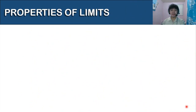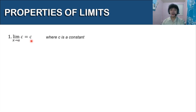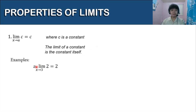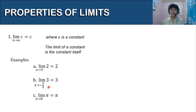For this video we're going to be discussing the properties of limits. Let's have the first one: the limit of c as x approaches a is equal to c, where c is a constant. We should remember that the limit of a constant is the constant itself. For example, the limit of 2 as x approaches 3 is equal to 2, the limit of 3 as x approaches negative one-half is equal to 3, and the limit of pi as x approaches 0 is still equal to pi. As you can see, the limit of the constants 2, 3, and pi is the constant itself.